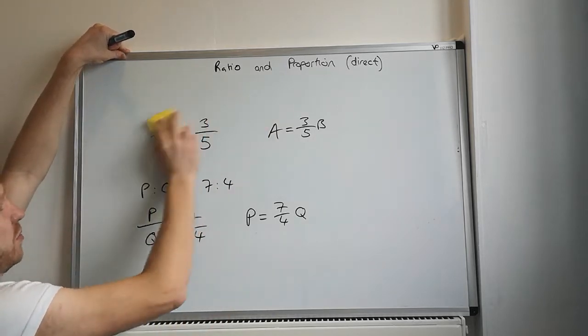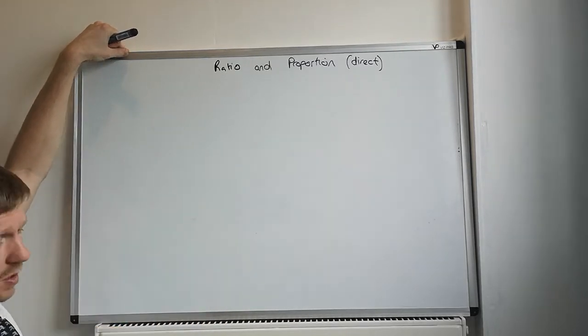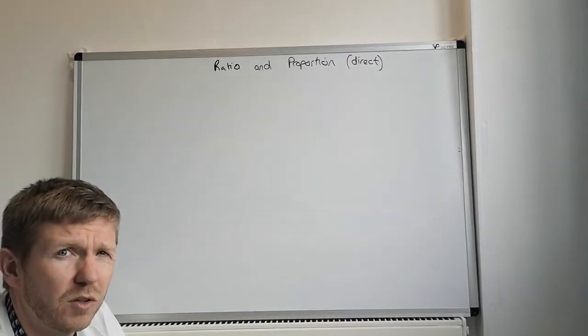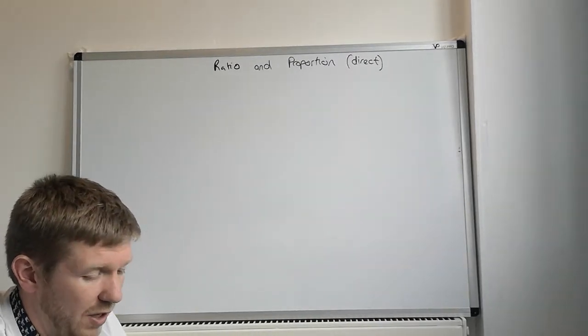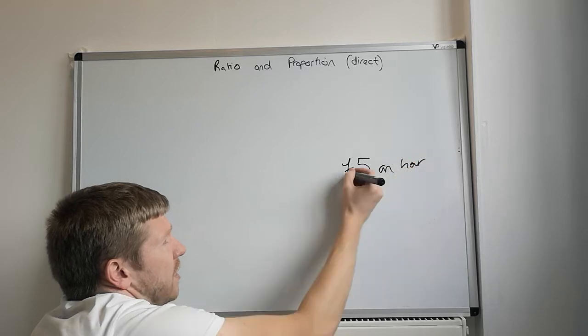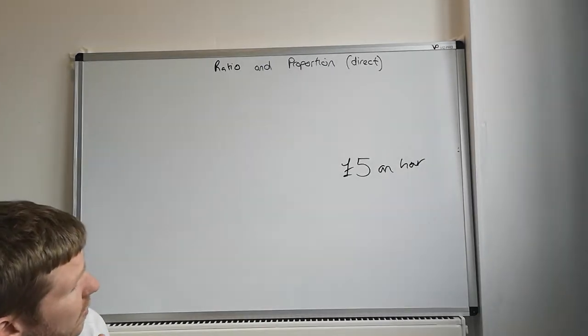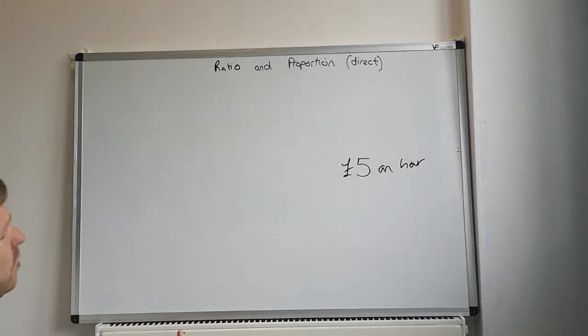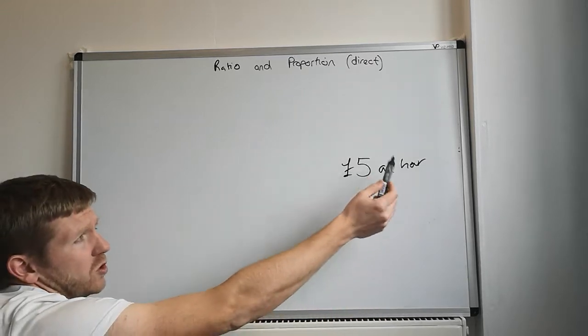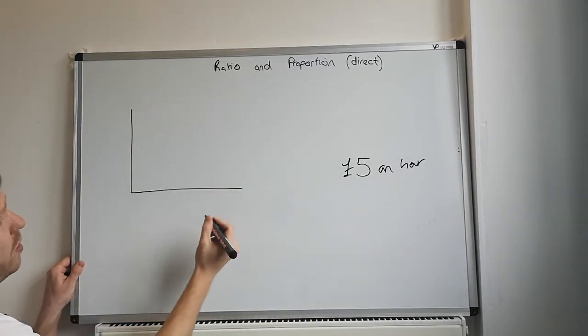Next thing, we're going to look at this direct proportion. Direct proportion is generally, well it's where you've got two variables. So the easy way to talk about this one is if we do an example. So let's say you've got a Saturday job and you earn, say, £5 an hour. Ignoring the fact that you're not going to pay tax or anything because you're not earning enough each week. So £5 an hour, if you work for 3 hours, you do 3 times 5. Your constant proportionality, your K, which we're going to come onto, would be 5.